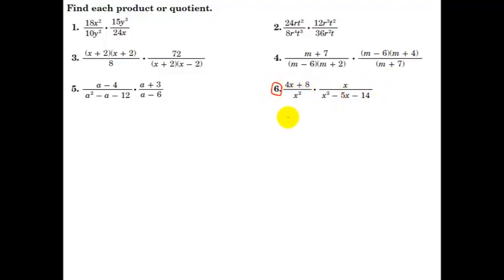Factor and cancel everything that you can. So right here, we can see there's a 4 that can come out, leaving behind x plus 2 over x squared. Over here, I've got multiplication. I've got the x. And the denominator is probably factorable.